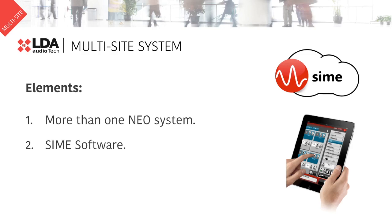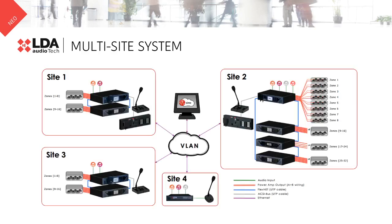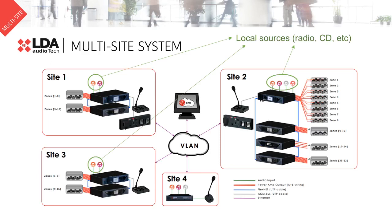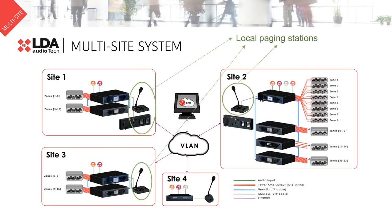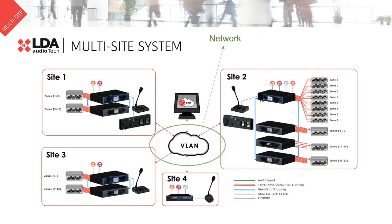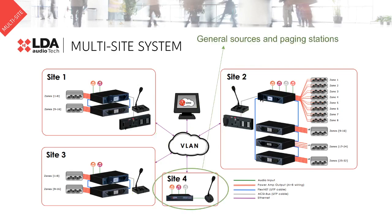As you can see in the diagram, each site has its own local sources and paging stations. All the different sites are connected through the network. In addition, it is possible to set up a site with general sources and general paging, where it is possible to page a message to any zone of any of the other sites.